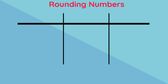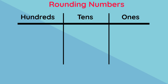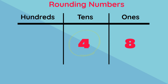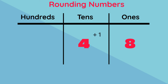Another way to do rounding is to use our place value columns. For rounding to the nearest 10, we write the number given and insert its place value headings. Let's use 40 as an example. Circle or highlight the digit under the 10s heading. Next we look at the digit to the right of the highlighted digit. If this digit is 4, 3, 2, or 1, it's replaced with 0 and the highlighted digit remains the same. But if the digit on the right is 5, 6, 7, 8, or 9, we add 1 to the highlighted digit and replace the 1s digit with a 0.